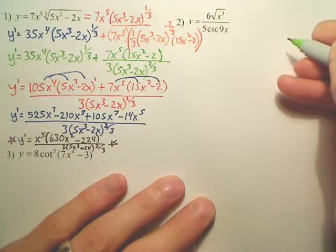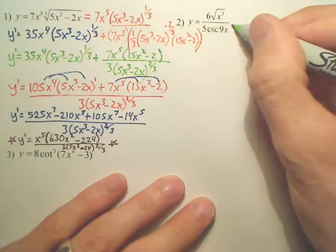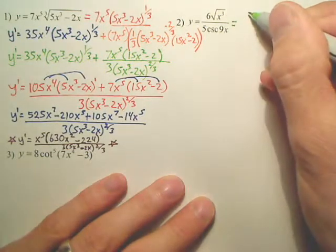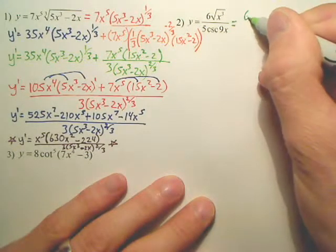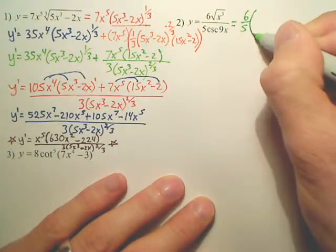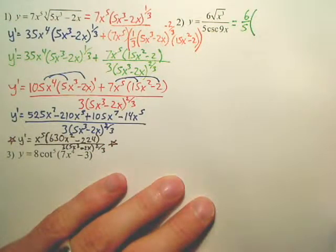Let's do the quotient rule here. First thing I'd actually probably do though before I do quotient rule is maybe let's try pulling a six-fifths out. Makes life a little bit easier.